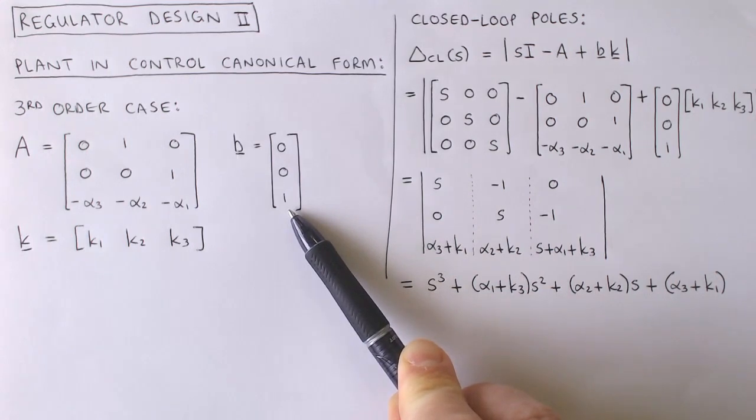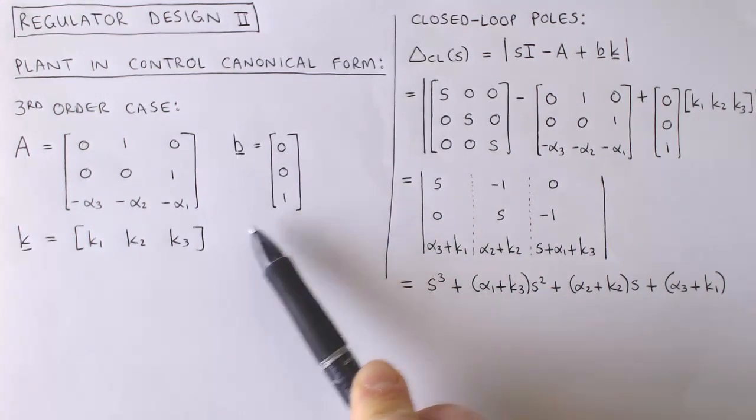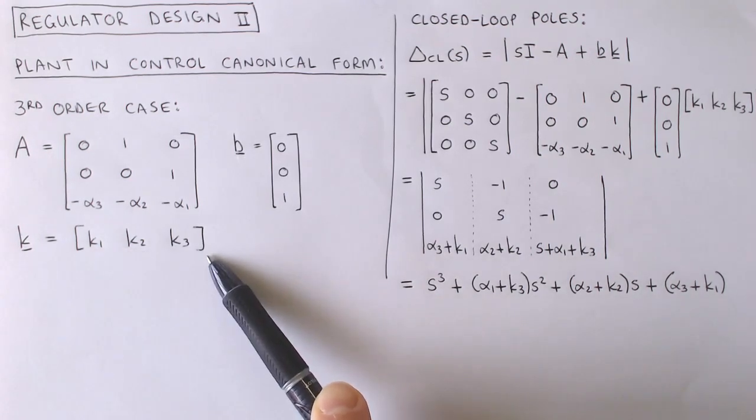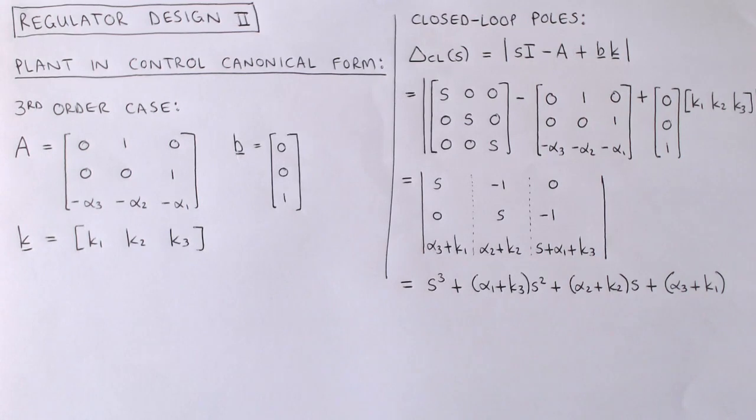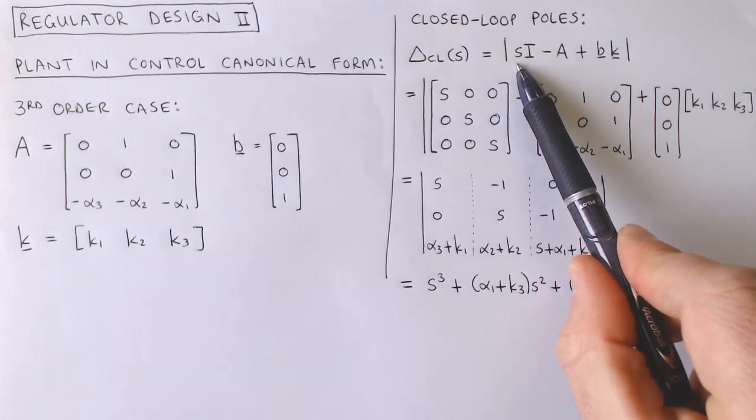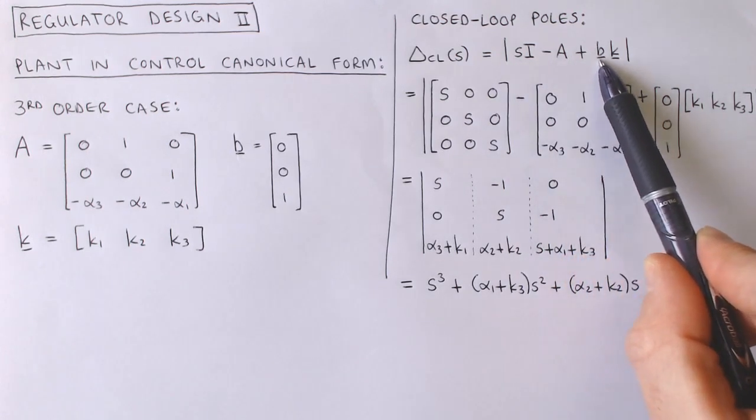Now suppose a regulator is constructed by adding state feedback, where the state feedback gain is given by this three element row vector. As developed previously, the closed loop poles of the regulator are given by the roots of the characteristic equation, where the characteristic polynomial is now given by the determinant of SI minus A plus BK.